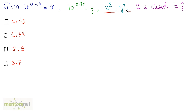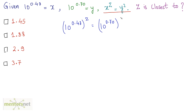We know x raised to z is equal to y squared. So I can write x's value is 10 raised to 0.48, so 10 raised to 0.48 raised to z is equal to y which is 10 raised to 0.70, so 10 raised to 0.70 raised to 2. According to the law of indices, a raised to m raised to n is a raised to m times n, so this becomes 10 raised to 0.48 times z, which is equal to 10 raised to 0.70 times 2, which is 1.4.